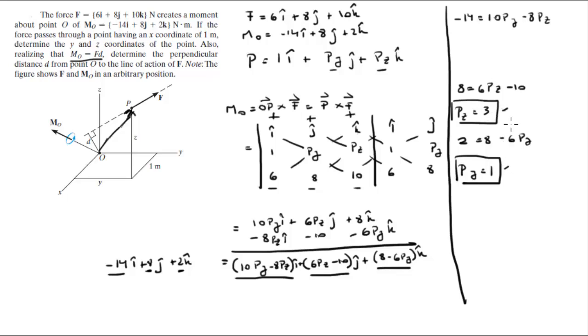These two values, you can plug them in here to verify. So you get negative 14 is equal to 10, py is 1, minus 8, and pz is 3. So 10 minus 8 times 3, which is negative 24. 10 minus 24 is negative 14, so negative 14 is equal to negative 14, which means that these values are correct.